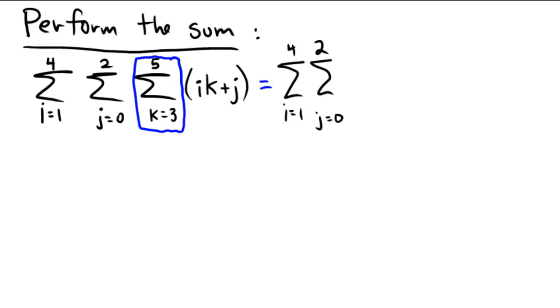And in order to evaluate the sum from 3 to 5, I'm going to substitute k for 3, then 4, then 5. So if I substitute k for 3, I get 3i plus j. If I substitute k for 4, I get 4i plus j. And then finally, if we do a 5, we get a 5i plus j.